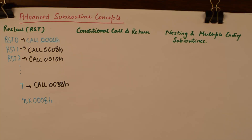The second thing to discuss in today's tutorial is conditional call and return instructions. A call can be used with some conditions applied to the flags of the microprocessor. I'll write down the list of conditional call instructions and specify their functions.